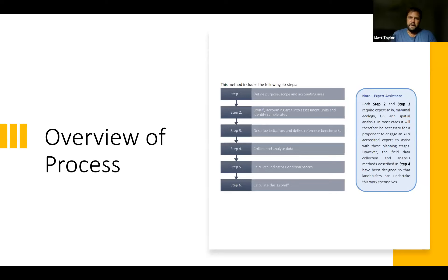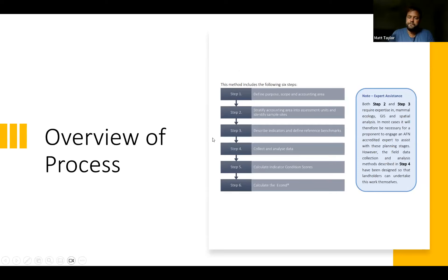The next step is planning the sampling and survey design. The term 'stratification' refers to dividing the landscape into sensible units of assessment, based on different habitat types or different management zones. For example, there might be a conservation area on a property where management differs from a grazing area, or small pockets of rainforest different from grassy woodlands. There's guidance around how to do this — it's a really critical part of documenting the full breadth of fauna that occurs on a property.